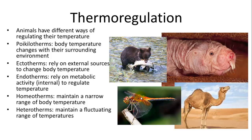Endotherms rely on their metabolic activity internally — the chemical reactions going on inside their bodies — to regulate their temperature. Examples include a bear and a camel. Some organisms have a very narrow range of body temperatures; humans and bears are included in that. Some have an ability to maintain a fluctuating range of temperatures. A camel can actually lower and raise its body temperature much more than other mammals because it lives in the desert, which gets very hot in the daytime and very cool at night.